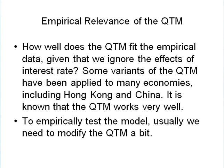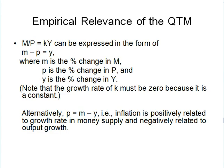To empirically test the model, usually we need to modify the quantitative theory of money a bit. Real money supply equal to ky can be expressed in the form of small m minus small p equal to small y, where small m is the percentage change in money supply, small p is the percentage change in price level, and small y is the percentage change in output. Note that the growth rate of k must be zero because it is a constant. Alternatively, small p is equal to small m minus y — inflation is positively related to the growth rate in money supply and negatively related to output.